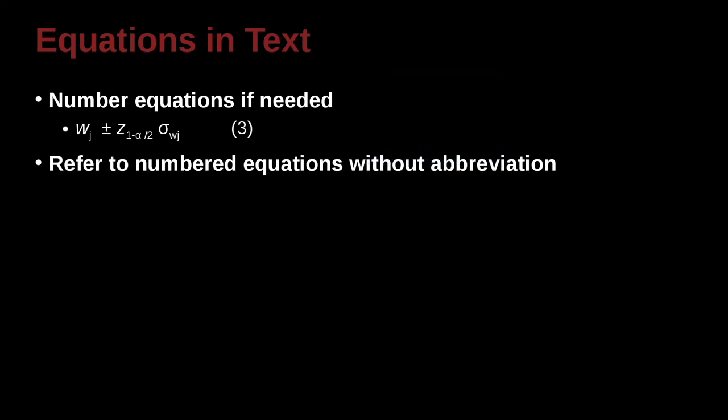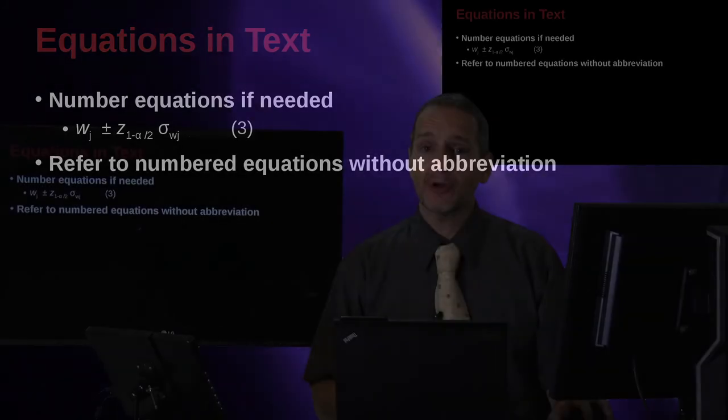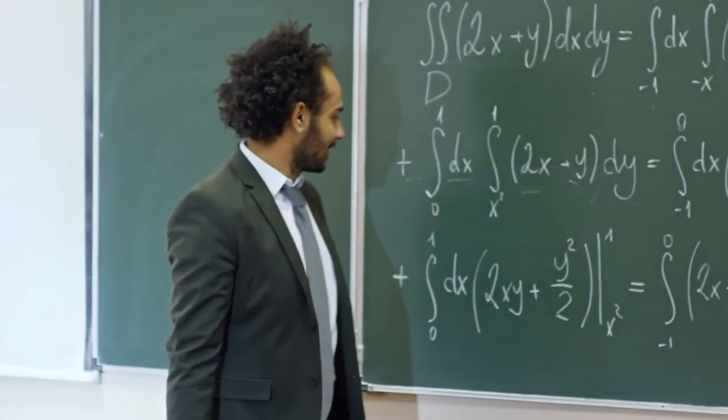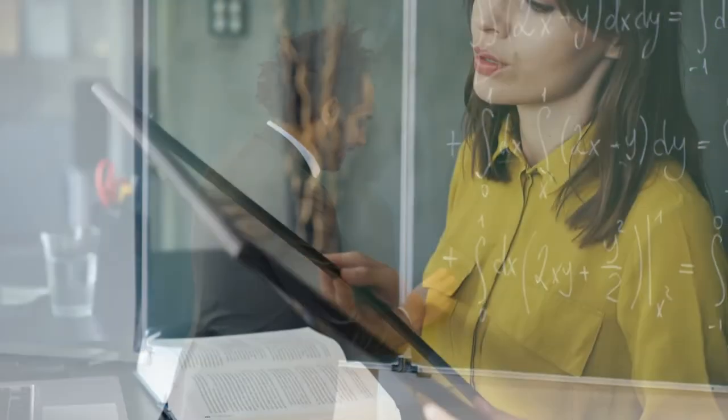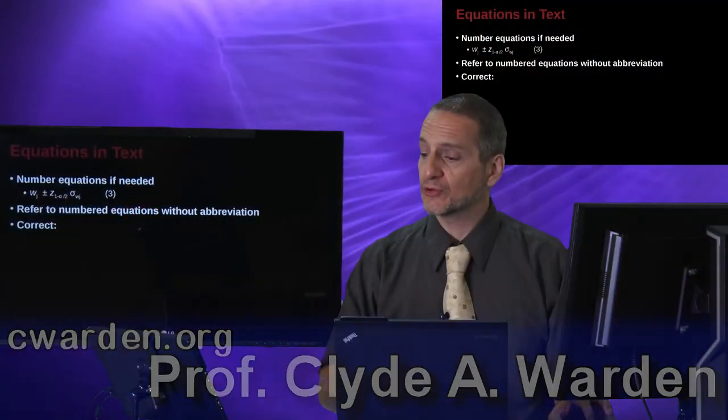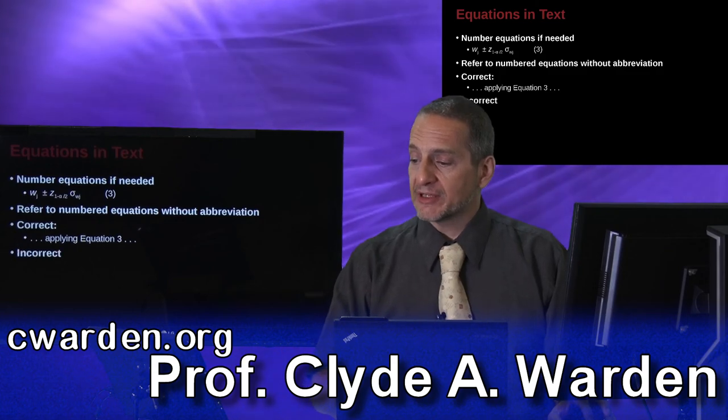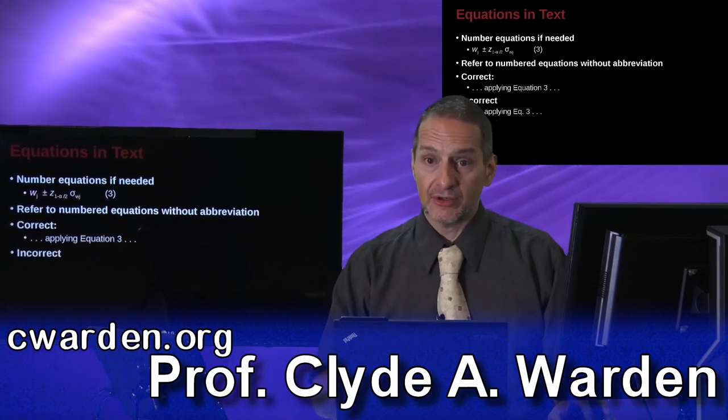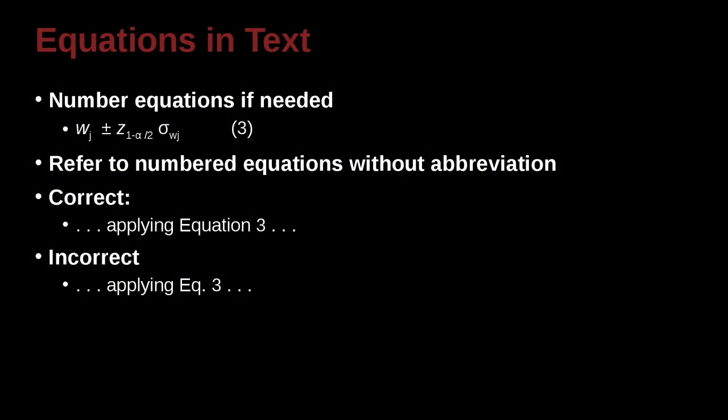Then when you're writing your body of your paper, rather than having the formula right there, you say see formula 3, see formula 2. So in that case, we could say, here's a good example, applying equation 3. So that means what? That means I'm going to use equation 3, and I'm talking about equation 3, but I don't want to write equation 3 because it takes up too much space, or it's too complicated.